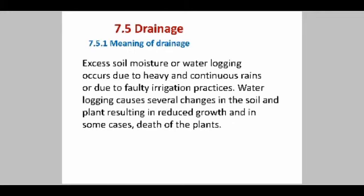Generally, drainage is the system or the process by which water or other liquids are drained from a place. Drainage systems lined with ports and pebbles ensure good drainage, though a drainage system can collapse due to too much rainfall. Drainage is important from a farming point of view, and farmers take care of it. In the farm area, excess soil moisture or water logging occurs due to heavy or continuous rainfall and due to faulty irrigation practices.